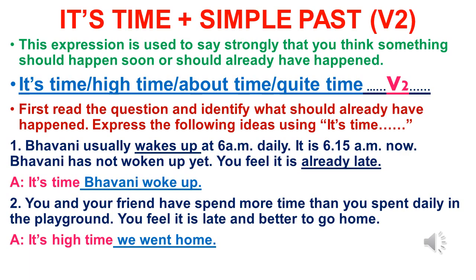Bavani usually wakes up at 6 am daily. It is 6:15 am and Bavani has not woken up yet. You feel it is already late. With that, we can write the answer: 'It's time Bhavani woke up' — because we use the second form of the verb in the clause, that's why 'wake up' has been written as 'woke up'.